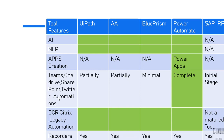When we talk about OCR, Citrix, and legacy automation, all four tools — UiPath, AA360, Blue Prism, and Power Automate — support these. Power Automate has now added Google OCR and Microsoft OCR as built-in features. SAP IRPA is still in progress. For recorders, all five automation tools provide recorder features.